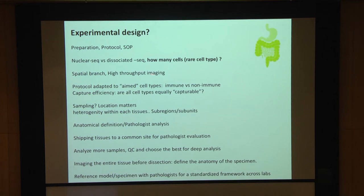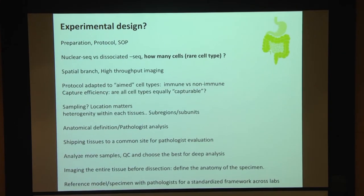We also highlighted the importance of the spatial branch and high-throughput imaging. The most important thing is to correlate spatial data with what we get from nuclear and dissociated sequencing, because protocols affect cell types unequally, and we don't know if all cell types are equally capturable for analysis.